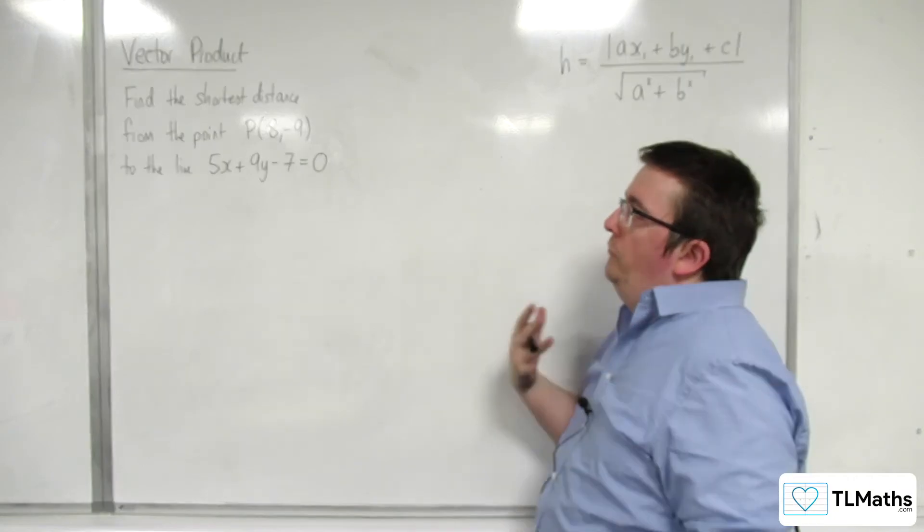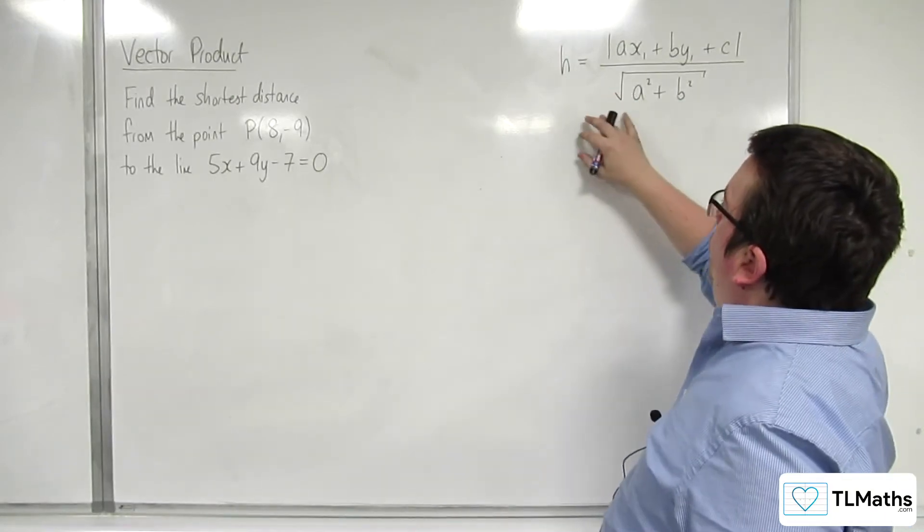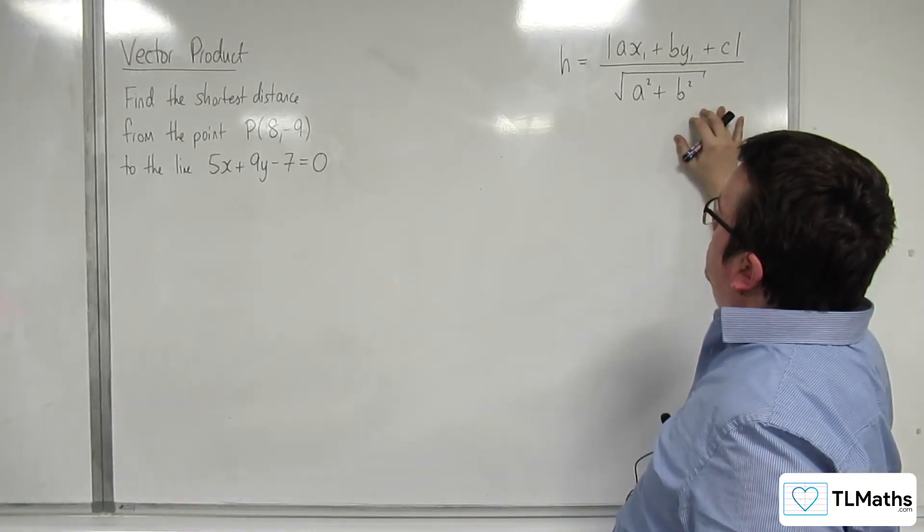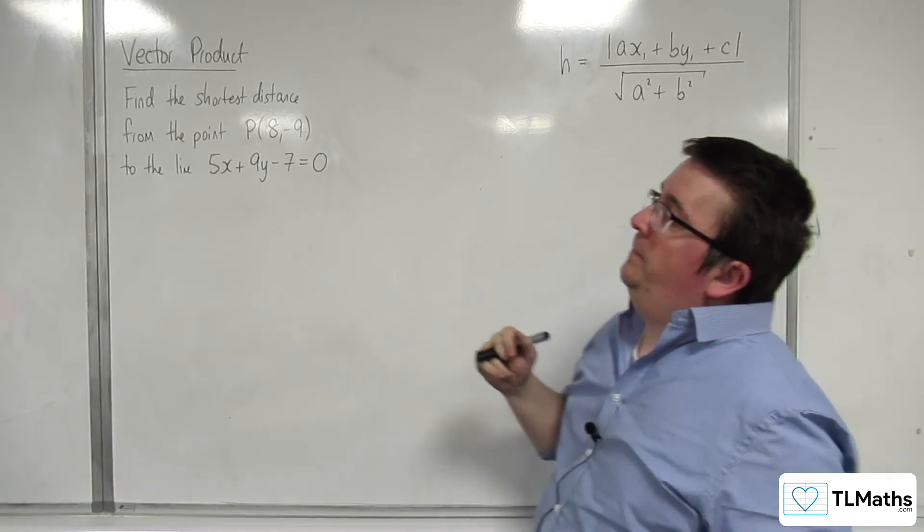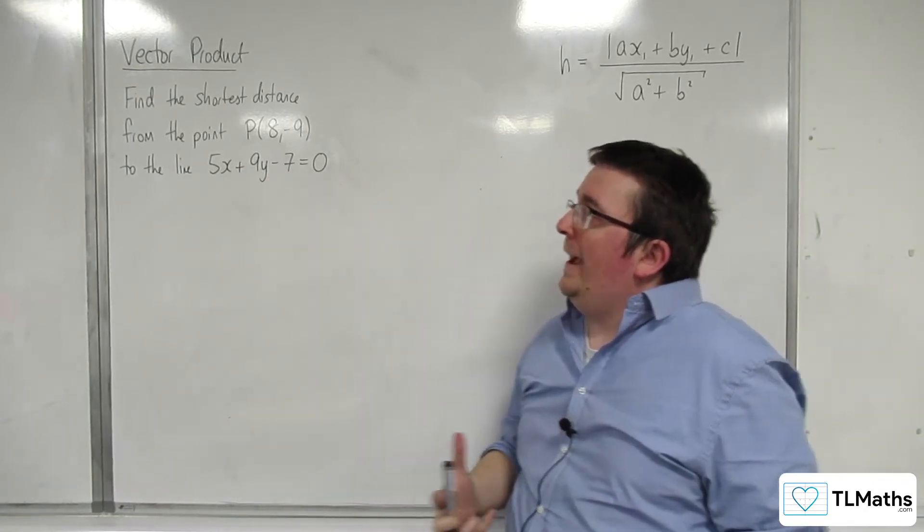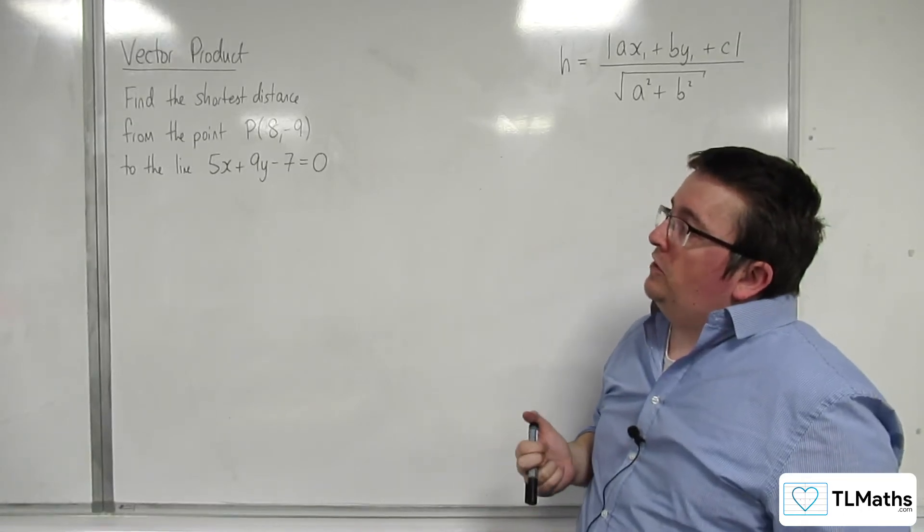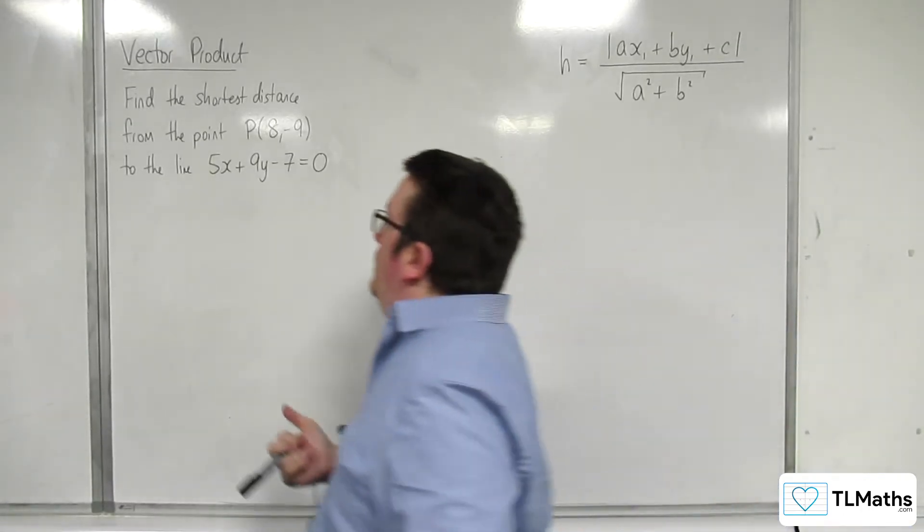Now that we've derived a formula for 2D, finding the shortest distance between a point and a line, we're going to try it with point P(8, -9) and the line 5x + 9y - 7 = 0.